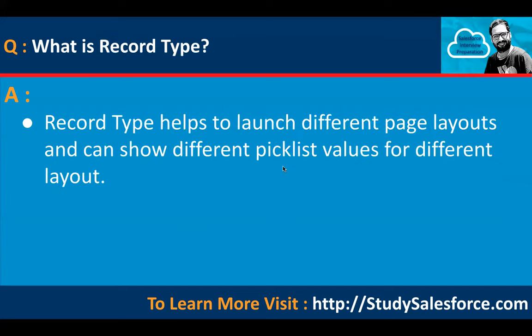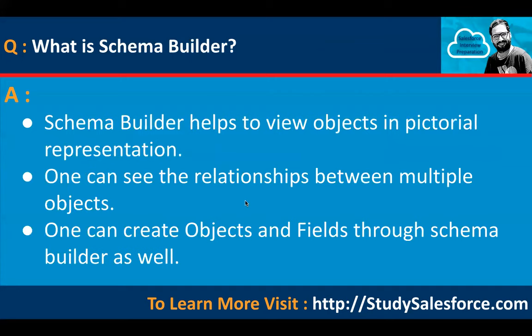What is record type? Record type helps to launch different page layouts and can show different picklist values for different layouts. What is schema builder? Schema builder helps to view objects in pictorial representation — one can see the relationships between multiple objects.